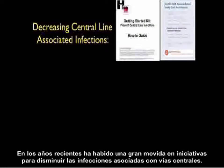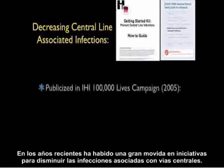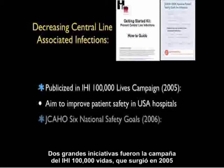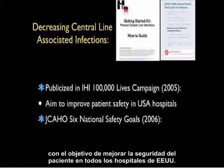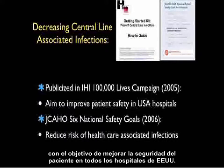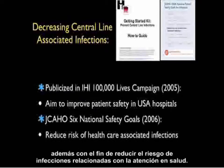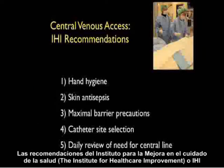Over recent years there has been increasing momentum in initiatives to decrease central line-associated infections. Two major initiatives were the IHI 100,000 Lives campaign, which came out in 2005 with the aim to improve patient safety in all USA hospitals, and in 2006 the Joint Commission's JCO came out with the six national safety goals, also with the aim of reducing risk of healthcare-associated infections.